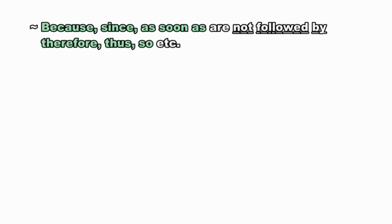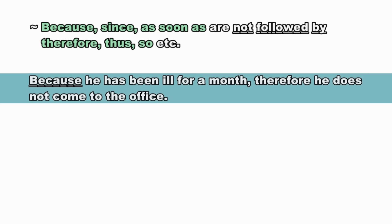'Because', 'since', and 'as soon as' are not followed by 'therefore', 'thus', 'so', etc. We often mistakenly use 'therefore', 'thus', or 'so' after 'because' or 'since', which is incorrect. For example: 'Because he has been ill for a month, therefore he does not come to the office' — using 'therefore' after 'because' is wrong.